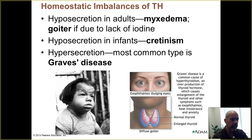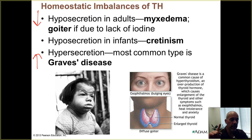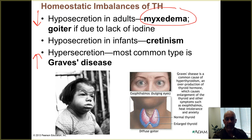Homeostatic imbalances of thyroid hormone include hyposecretion — too little — and hypersecretion — too much. In adults, hyposecretion of T3 and T4 is called myxedema. Edema refers to swelling, which is one of the symptoms of low thyroid hormone. There are different types of hyposecretion; one is due to lack of iodine in the diet.